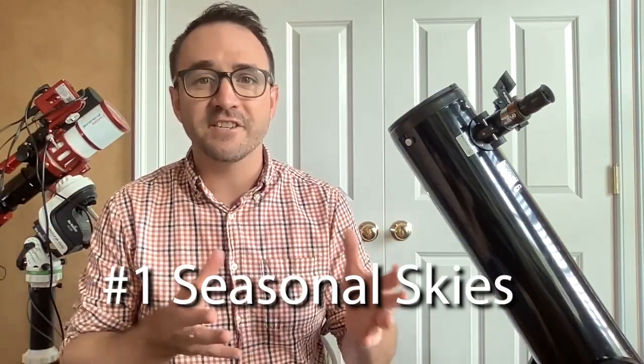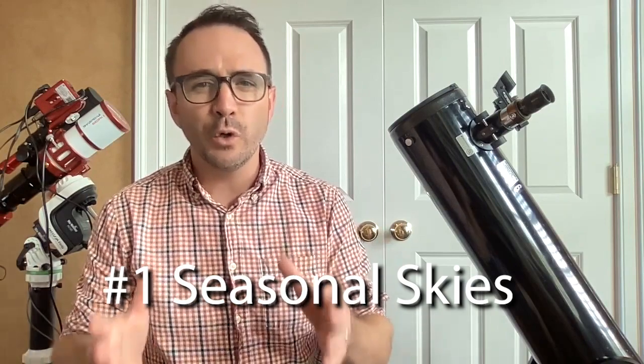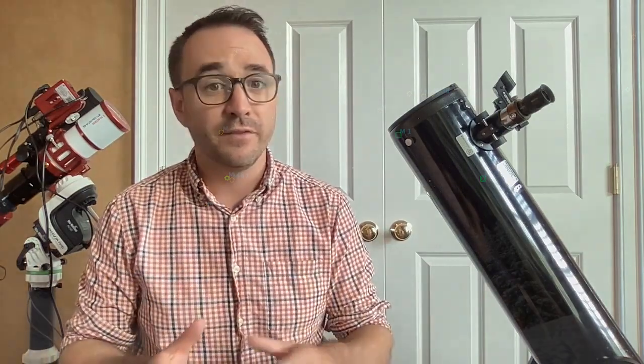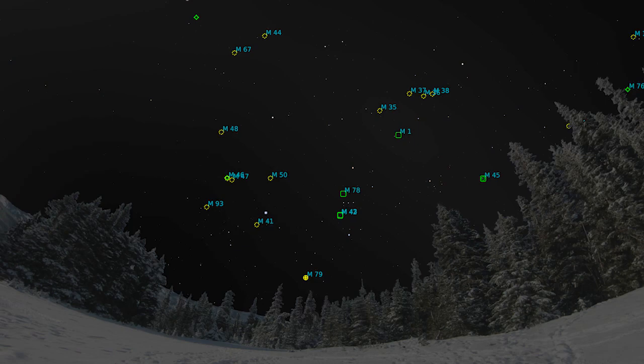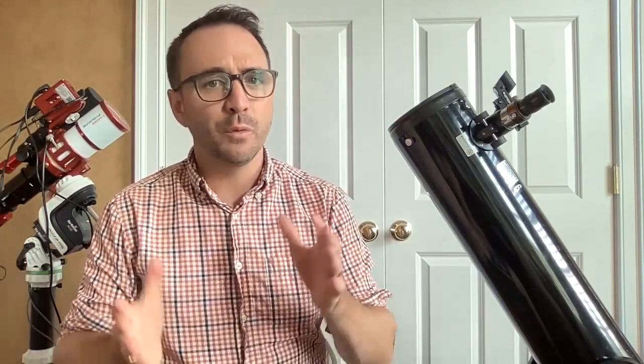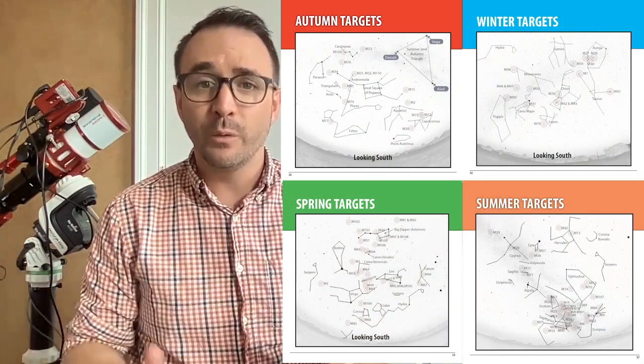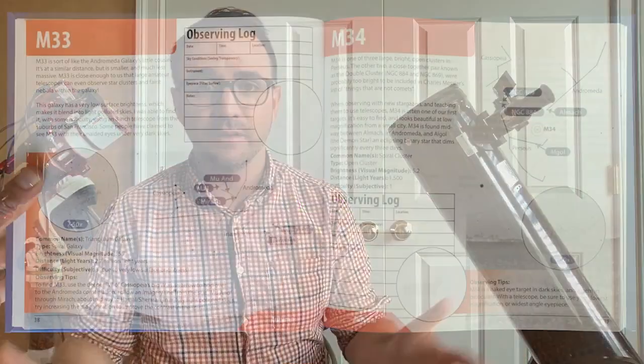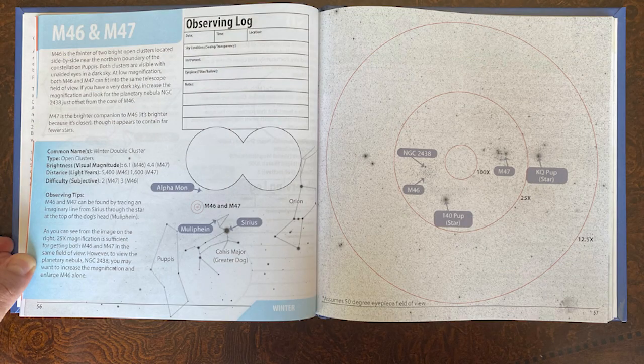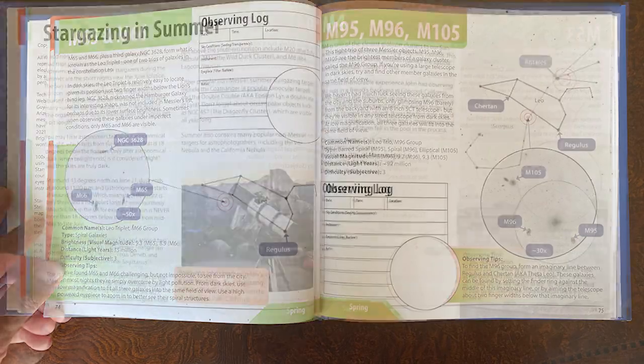Reason number one is that the skies are seasonal. Let's say you only observe right after dusk. Then only about a quarter of the objects are visible at that time. If you only observe in the evenings, you'll want to divide this list of objects into the four seasons, which we've done in our book. We've even color coordinated for you: autumn targets, winter targets, spring targets, and summer targets.